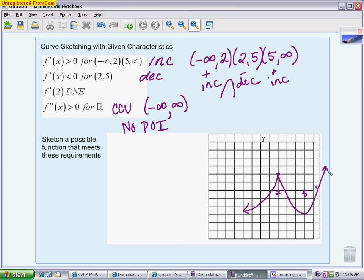So here is one example of a picture that would meet every requirement that's there. We have concavity continuously being concave up. We have our switching from increasing to decreasing to increasing. And then we also have an issue at 2. We have a sharp point.